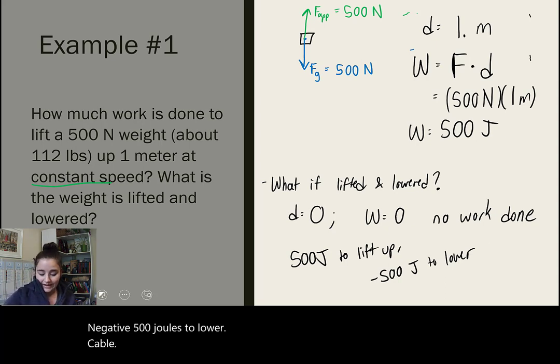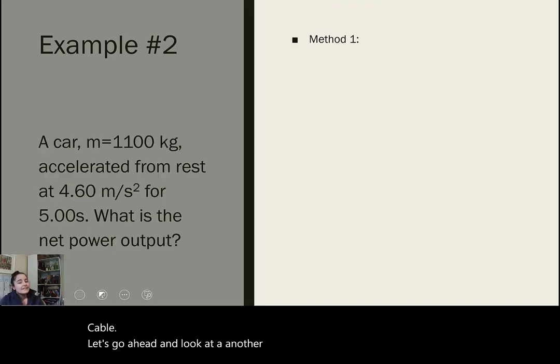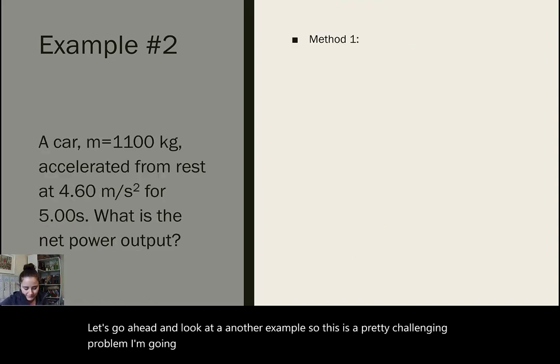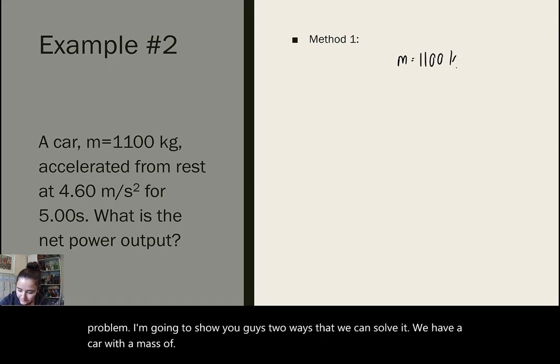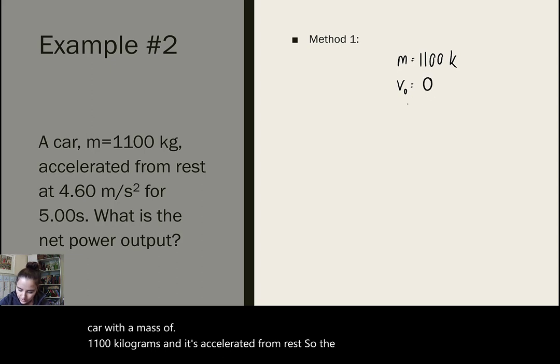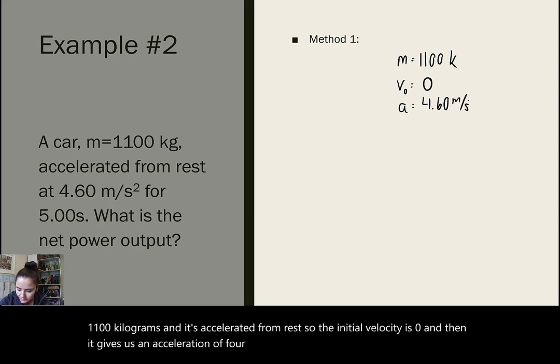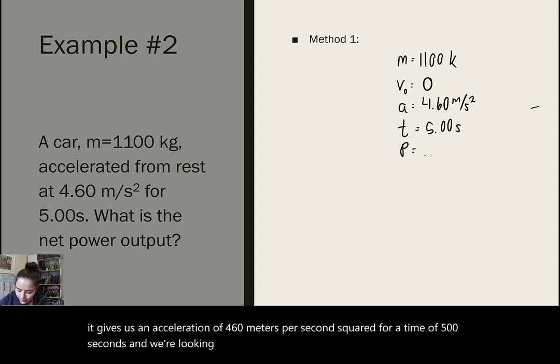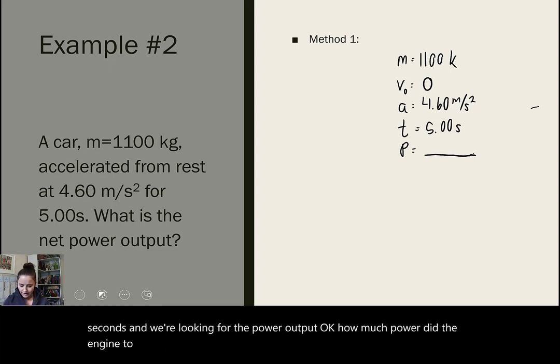Let's go ahead and look at another example. So, this is a pretty challenging problem. I'm going to show you guys two ways that we can solve it. We have a car with a mass of 1,100 kilograms and it's accelerated from rest. So, the initial velocity is zero and then it gives us an acceleration of 4.60 meters per second squared for a time of 5.00 seconds. And we're looking for the power output.